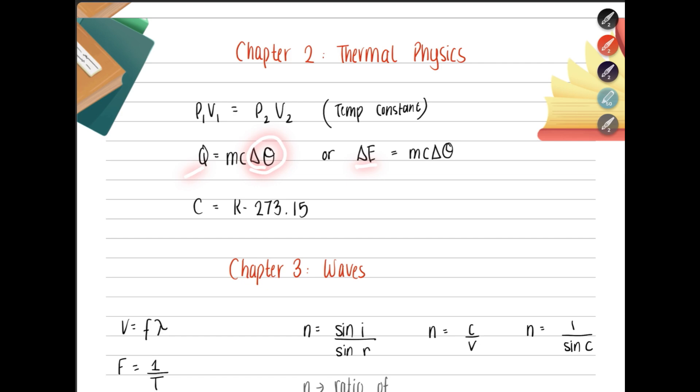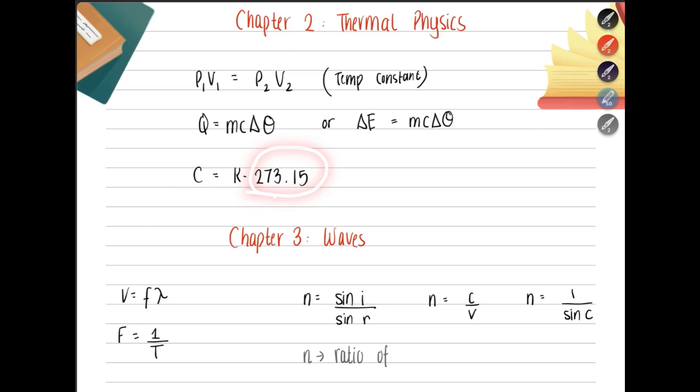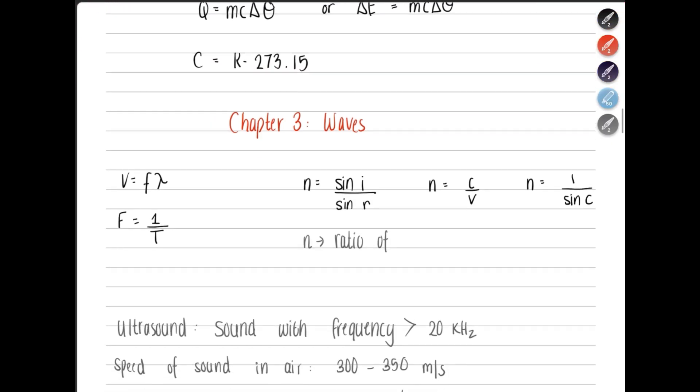Q can also be written as delta E. Both of them are the same. If you want to convert Kelvin into Celsius, subtract 273.15 from Kelvin. And then if you want to find Kelvin, you just move this over there and add it to Celsius.